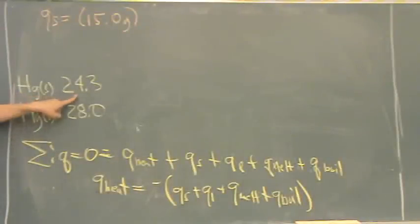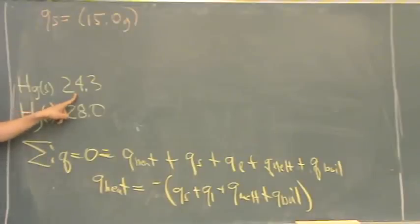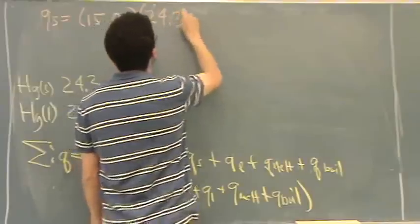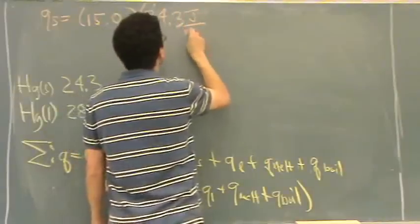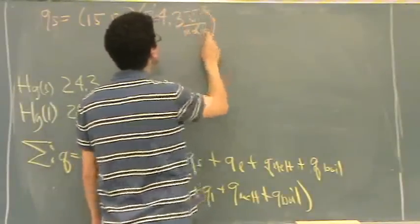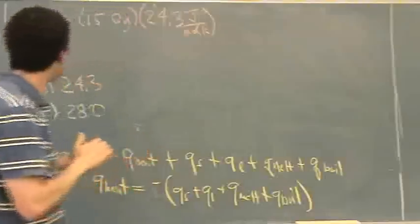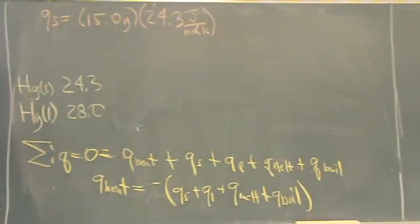The heat capacity for the solid is right here, which was given in the problem. Make sure I'm doing the solid right now. 24.3 joules per mole. You said heat capacity, is that the same as specific heat? Specific heat, sorry I should have said specific heat. You're right.